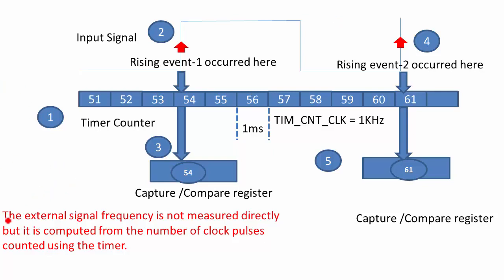So here the external signal frequency is not measured directly but it is computed from the number of clock pulses counted using the timer. Now let's understand this with an example.